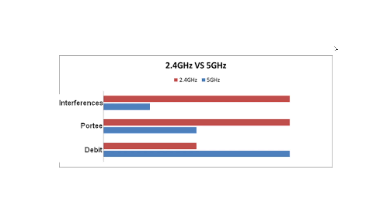Not all devices today still have 5 gigahertz implemented. A lot of devices are still stuck on 2.4, but more and more we have laptops and dual-band routers that have these two connections possible.